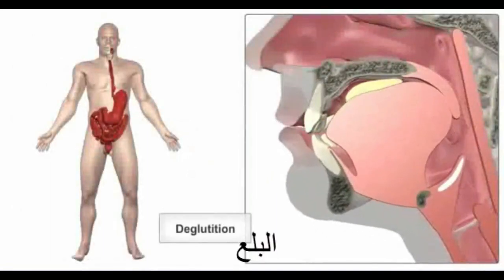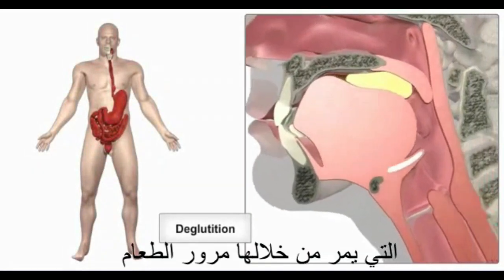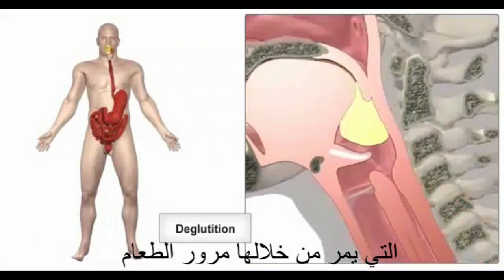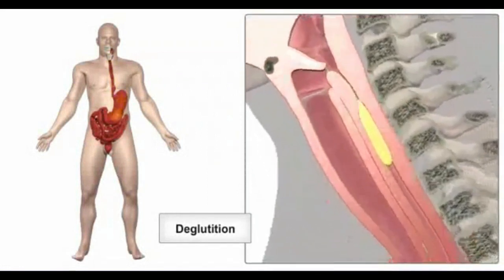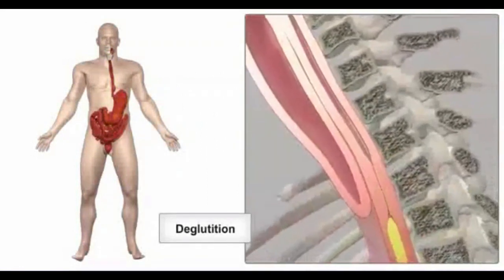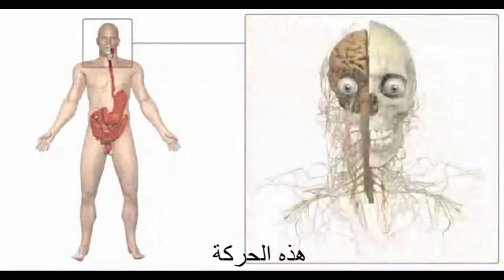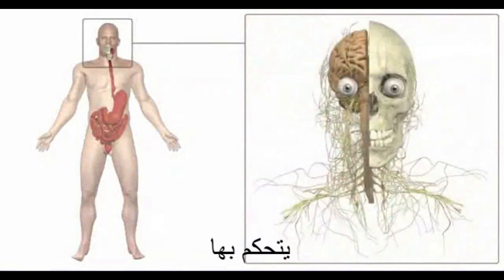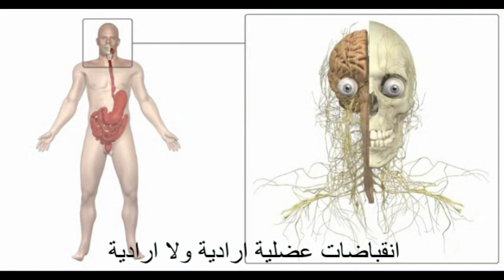Swallowing, or deglutition, is the process by which food passes from the mouth to the stomach. This movement is controlled by the nervous system and involves both voluntary and involuntary muscle contractions.